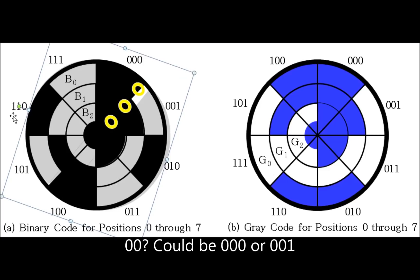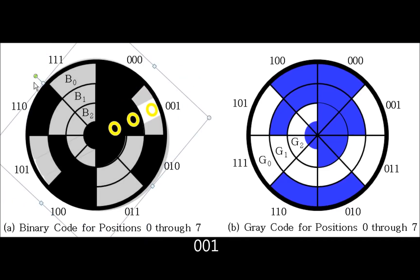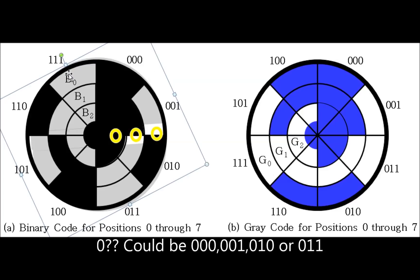However, as we continue to rotate it around and we get a nice clean reading 001, when the transition goes between 001 and 010, we notice now that there are two bits that are ambiguous. So it could be 0 and then the other two values could either be 0s or 1s. So therefore, there's four possible states there. It could be 000, 001, 010 or 011.